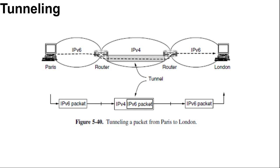The solution to this problem is a technique called Tunnelling. To send an IP packet to a host in the London office, a host in the Paris office constructs a packet containing an IP version 6 address in London and sends it to the multi-protocol router that connects the Paris IP version 6 network to the IP version 4 internet. We have already discussed IP version 4 and IP version 6, so we will not go into detail here.